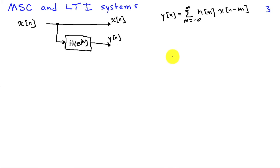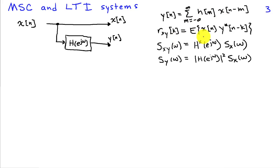The magnitude squared coherence is a very important property when linear time invariant systems are involved. Assuming we have some random signal x of n that generates a new random signal y of n by applying a filter with frequency response h of e to the j omega, y can be written in terms of the impulse response via convolution with x. Using the fact that r x y of k is the expected value of x of n times y complex conjugate of n minus k, we substitute for y of n and take the Fourier transform. We find that the cross spectrum between x and y is the complex conjugate of the frequency response times the power spectrum of x, and the power spectrum of y is the magnitude squared of the frequency response times the power spectrum of x.